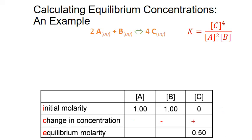For the amount that they change, we're going to use the variable x, scaled by the coefficients from the balanced chemical equation. For every one molecule of B that reacts, we also react two molecules of A and form four molecules of C according to the equation. We simply add the coefficient from the equation to our variable x to indicate the amount of change in the second row.